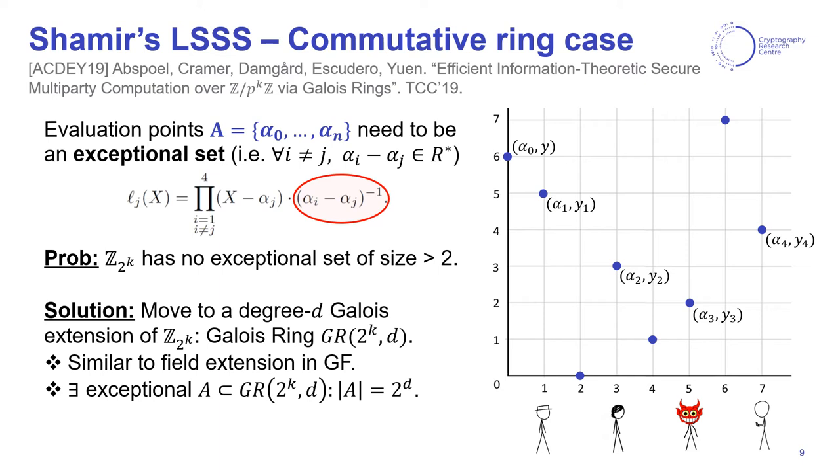This is due to the fact that any set of three elements will contain two elements with the same parity, so their difference is going to be a multiple of 2 and hence a zero divisor. The solution to this problem is the same as when we want to compute over F₂. Namely, we move to a Galois extension of the integers modulo 2^k that is of degree logarithmic in the number of parties. The result is known as a Galois ring, and for the purpose of this talk, the only thing you need to understand is that exponentially bigger exceptional sets can be found by moving to these extensions.